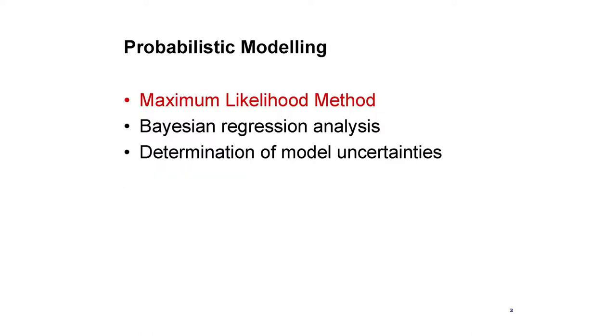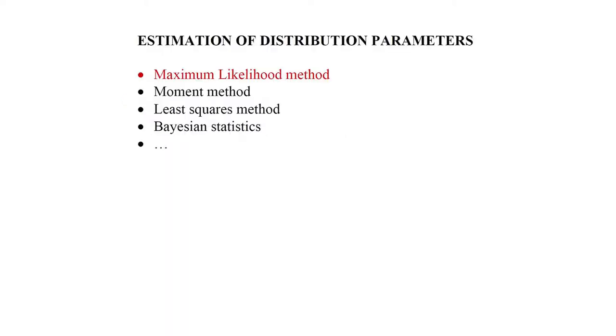First, the maximum likelihood method, which some of you probably already know. It is one of the tools used to obtain the distribution parameters in a given distribution. There are other techniques to obtain distribution parameters, like the moment method, chi-square method, and Bayesian statistics, which I will also mention later in this presentation.